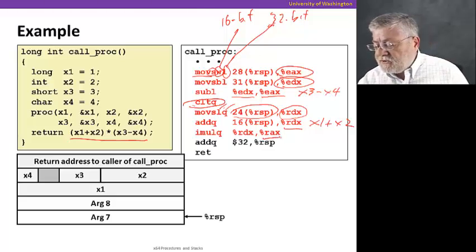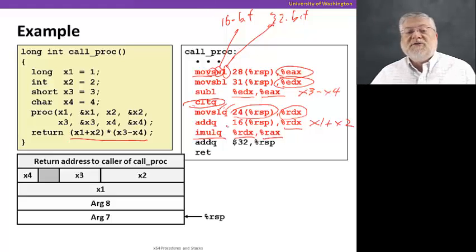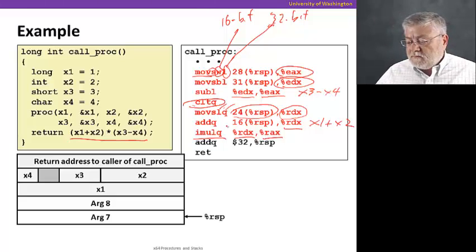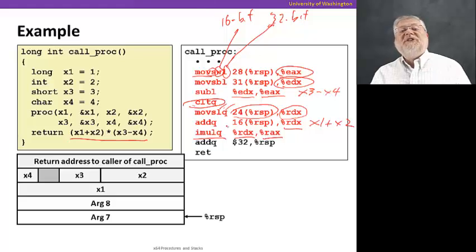Finally, we take those two registers, RAX and RDX, and do a multiply instruction to compute the final result. The result is placed into RAX, ready to be returned. Remember, we put the return value in the RAX register.